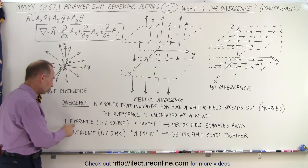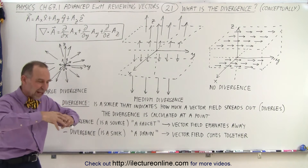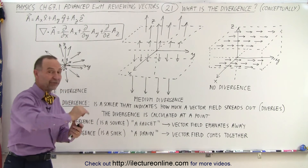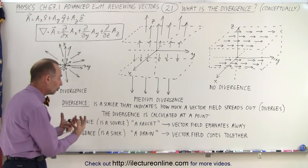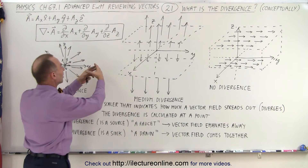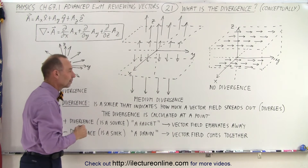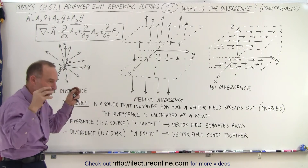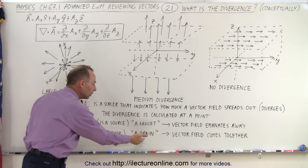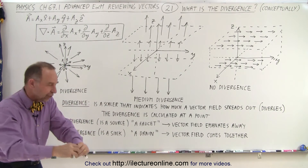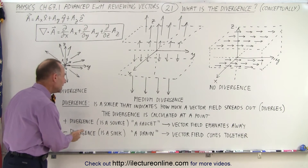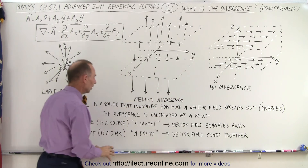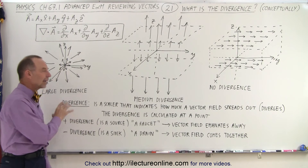We can have a positive divergence or a negative divergence. If it's positive, there's a source — an emanation from a single point going outward, called a source or a faucet, like a faucet where water comes out. There may be a point in space with a vector field emanating from it. Or it can be a negative divergence — a sink — where the vector field seems to disappear at a particular point, like water going down a drain. So the vector field either comes together at a single point or emanates away from one.